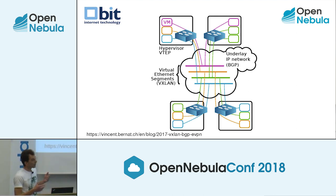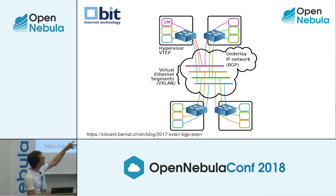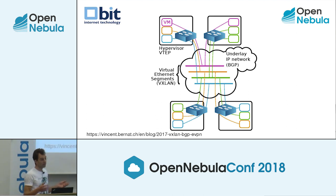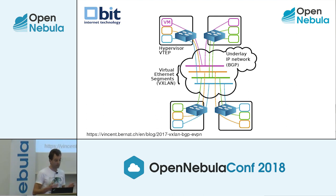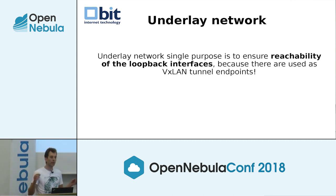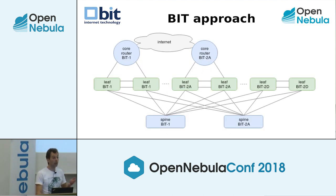We're going to talk about underlay and overlay networks. You want to connect layer two virtual machines spread across data centers. In between is the underlay IP network, whose sole purpose is to forward VXLAN packets using BGP - it's all routed. On top of that you use VXLAN to encapsulate all traffic, and you run another BGP overlay network on top to create the overlay. The underlay's single purpose is to ensure reachability of loopback interfaces - all virtual terminal endpoints on participating nodes are configured on the loopback.